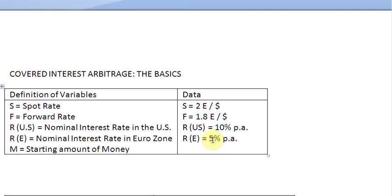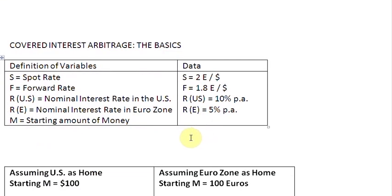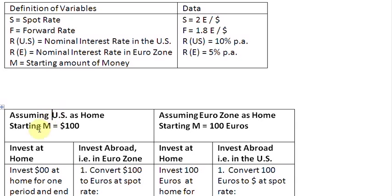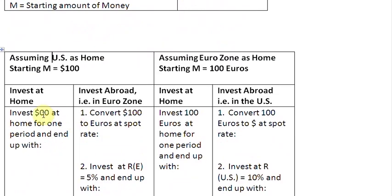Let us see how the covered interest arbitrage works. Let us assume in the beginning that our home country is the US. So we are going to focus on this section of the table for now, assuming US as the home country and also assuming that our starting amount of money is $100. Let us examine two alternatives.